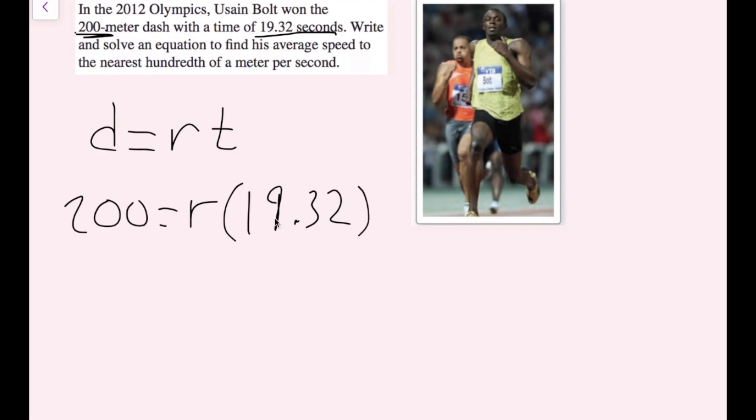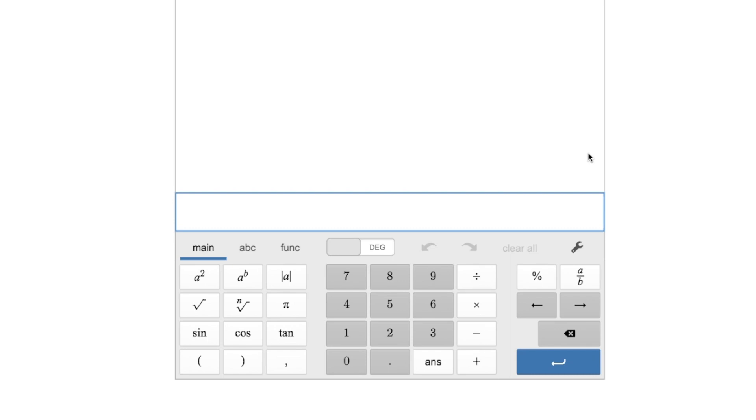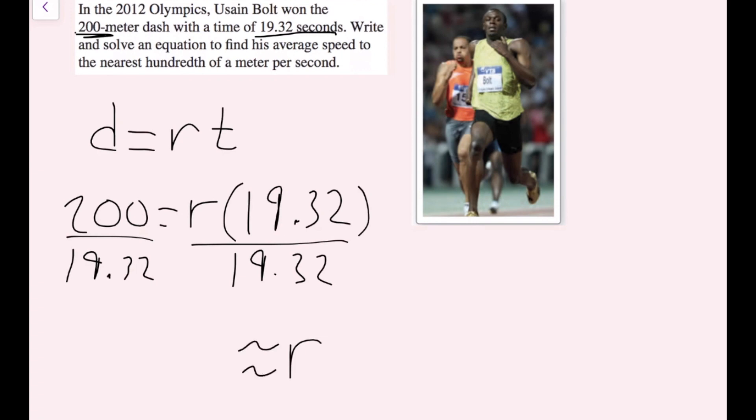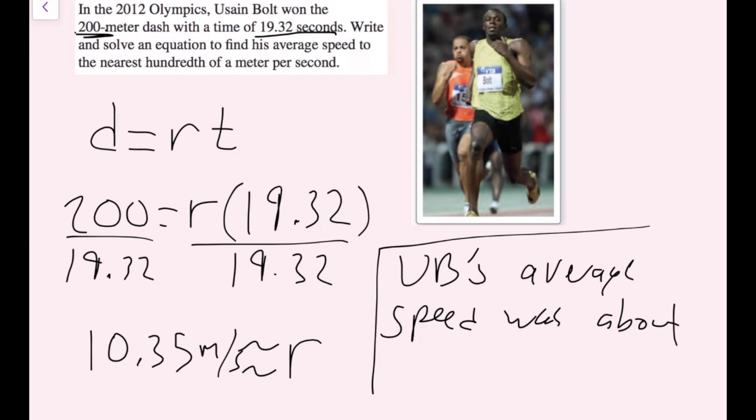So in this case, I have R times 19.32. But to solve for R, to cancel multiplication, I'm going to divide by 19.32 on both sides. Now, you could do this out, but that might take a while. So I'm going to use a calculator. So 200 divided by 19.32 gives me 10.35. And we want our answer to the nearest hundredth. So R is about 10.35 meters per second. And for a word problem, I like to have a word answer. So Usain Bolt's average speed was about 10.35 meters per second.